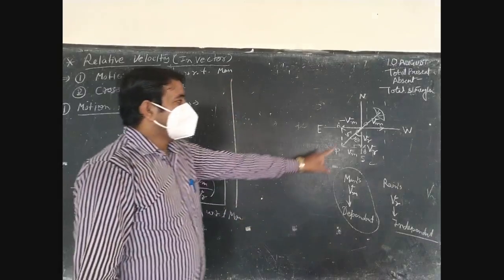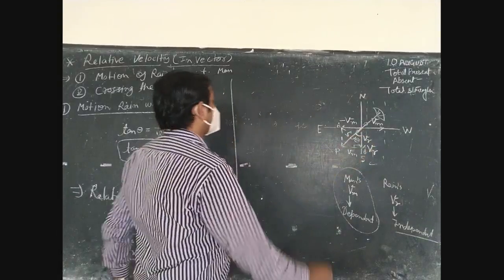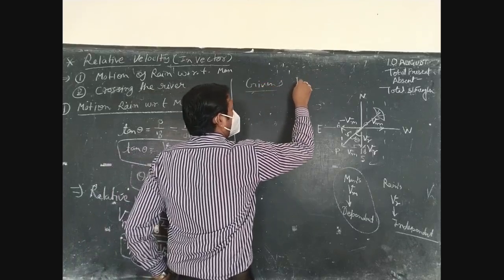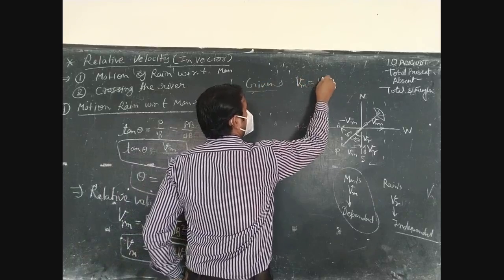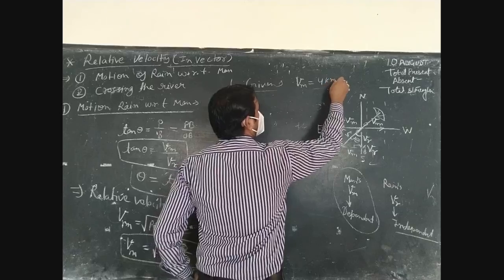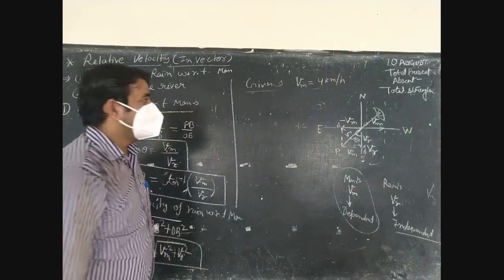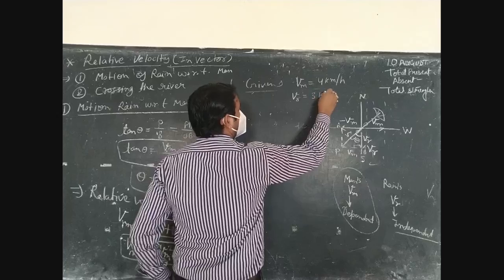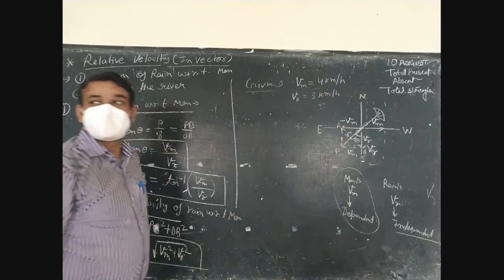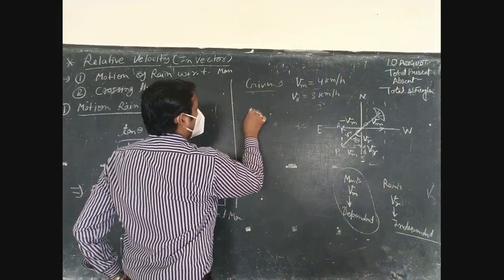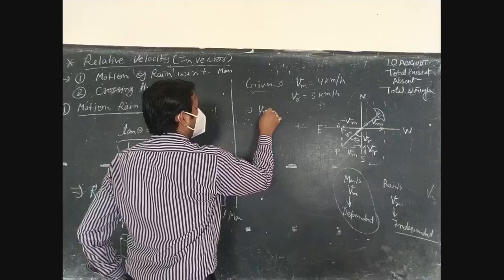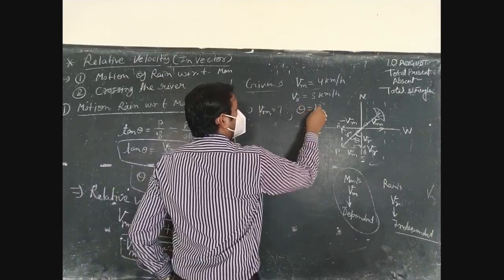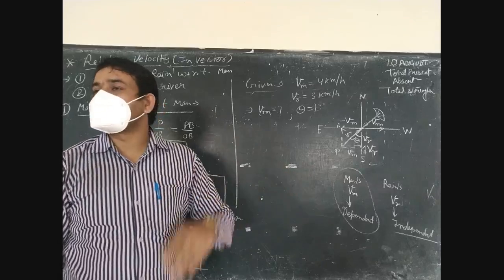In the diagram, it is given that the velocity of man is 4 km per hour and the velocity of rain, Vr, is 3 km per hour. You need to determine the velocity of rain with respect to man and theta, which is the direction of holding the umbrella to protect himself.